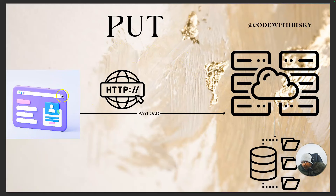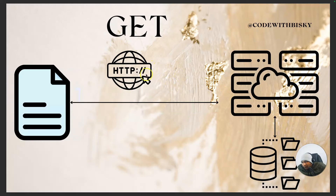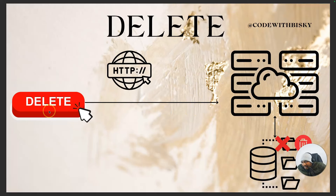For PUT, if you have a profile and want to update a few details like first name or surname, you use a PUT method and in the database you are just updating the record. For GET, there's a record in the database with your details like email address or username. You use a GET method to retrieve that information from the database. If the record does not exist, it throws an error. For DELETE, if you want to delete your profile, you click the delete button, the method is DELETE, and the record is removed from the database.